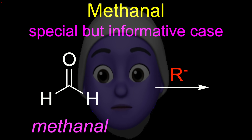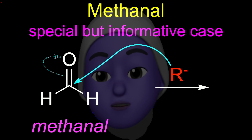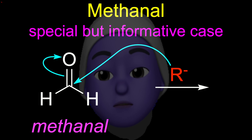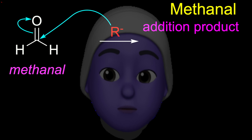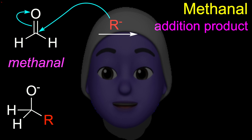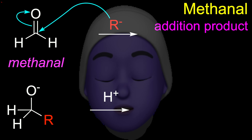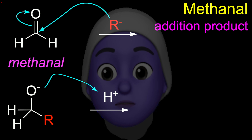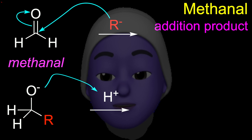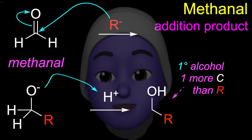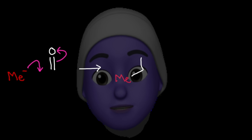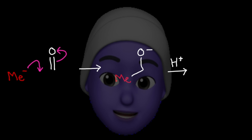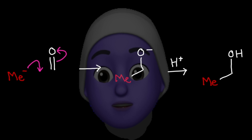For methanol, this electron flow produces an alkoxide which, after protonation, gives a primary alcohol with one more carbon than the nucleophile adding to it. Addition of methyl anion to methanol gives ethanol.